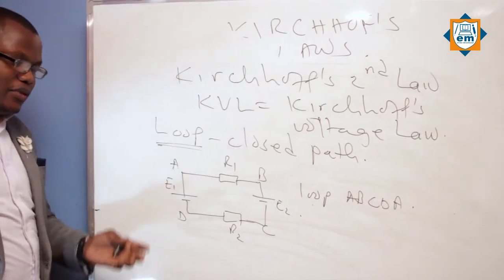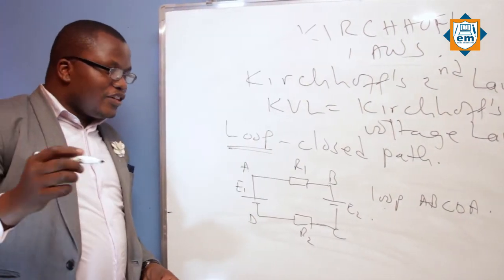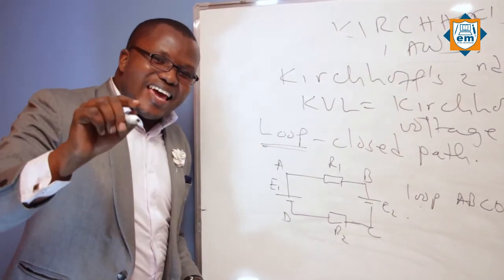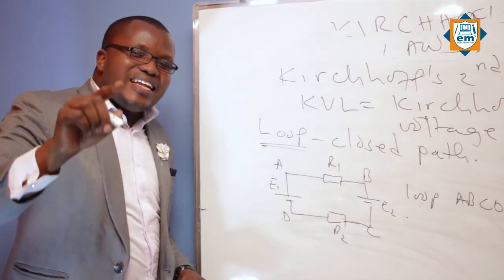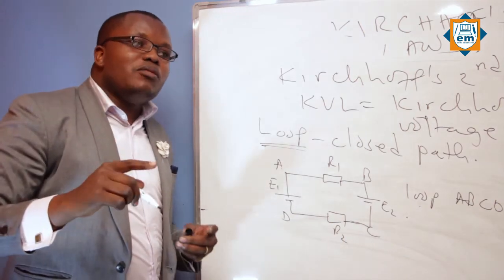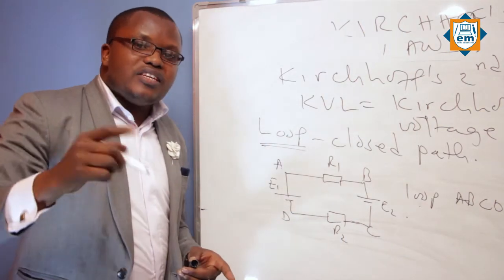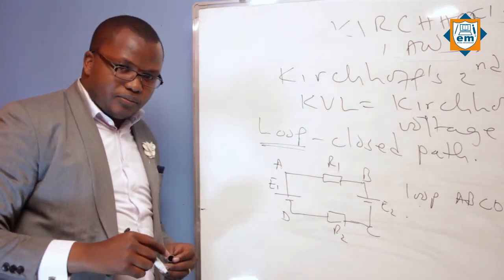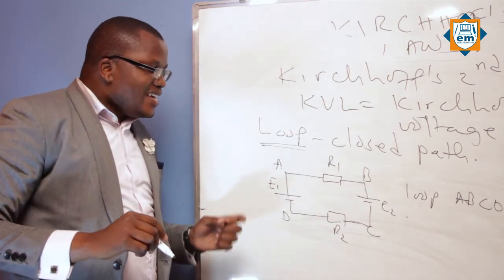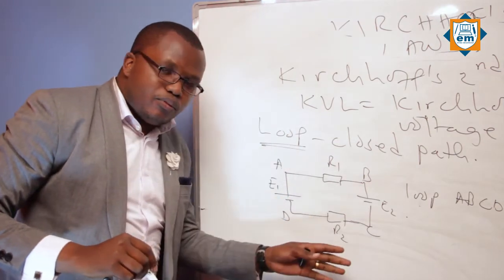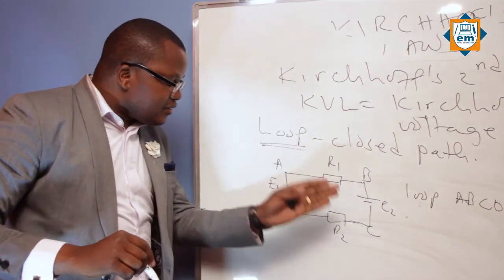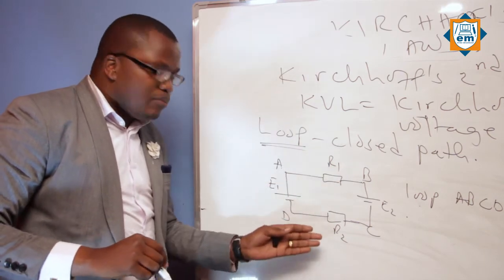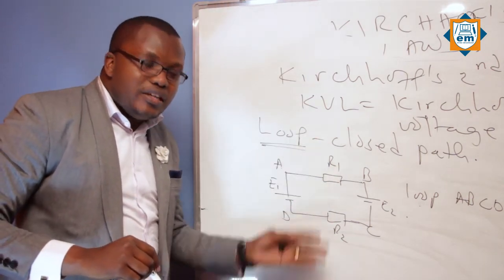Sasa, Kirchhoff voltage law inasemaje? In any closed loop, the algebraic sum of electromotive forces is equal to the algebraic sum of potential difference. Narudia tena: In any closed loop, the algebraic sum of electromotive forces is equal to the algebraic sum of potential difference.